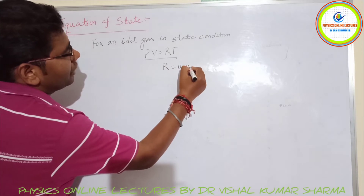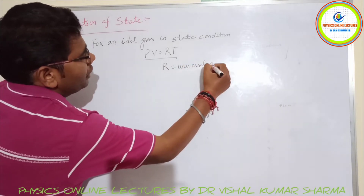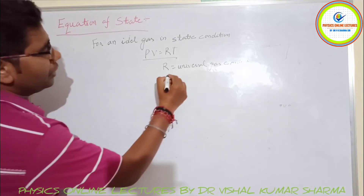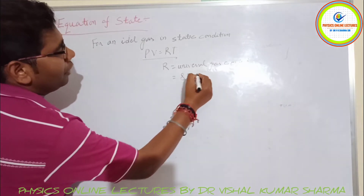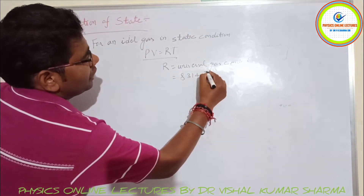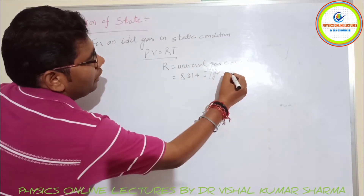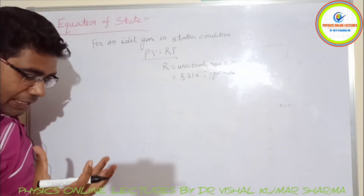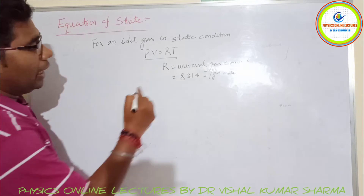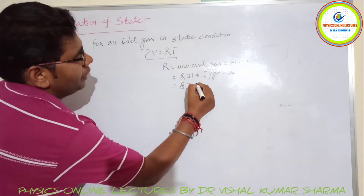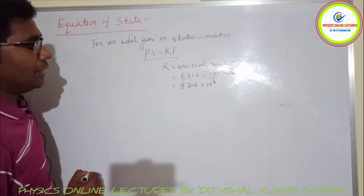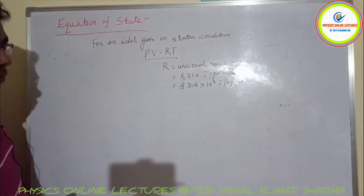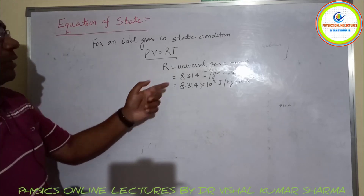Here R is the universal gas constant, with a value of 8.314 J per kg·mol·K. Alternatively, R = 8.314 × 10³ J per kg·mol·K.